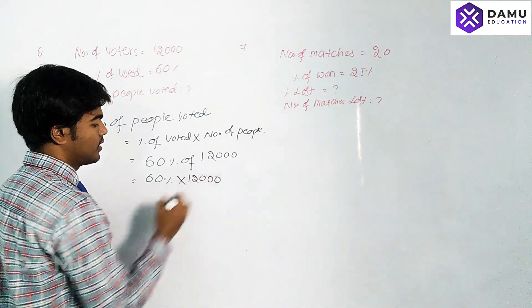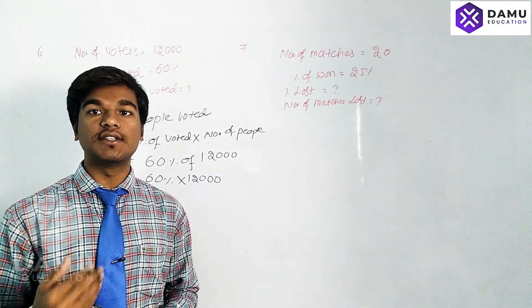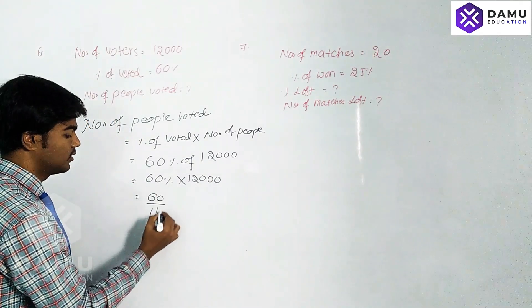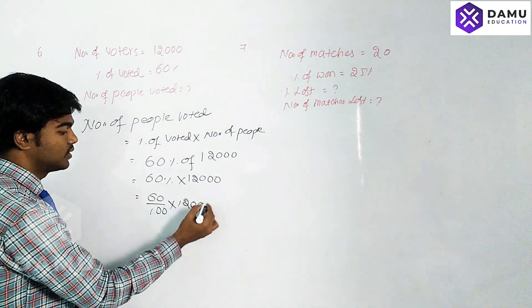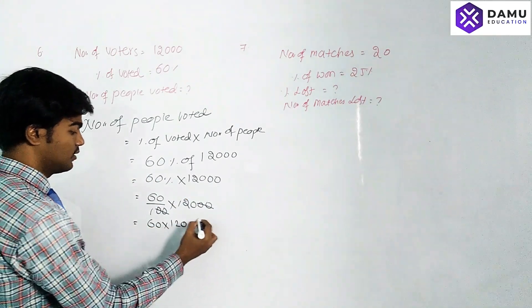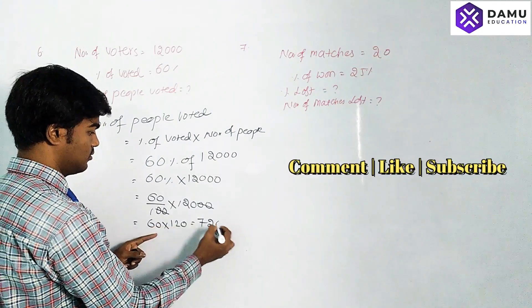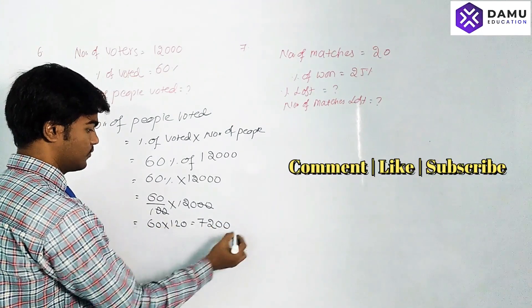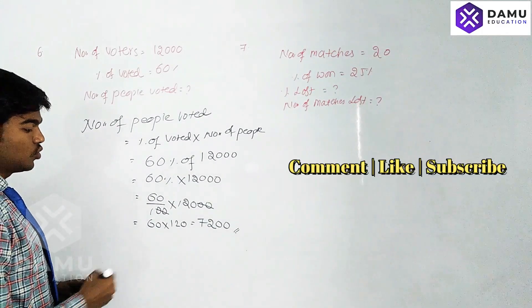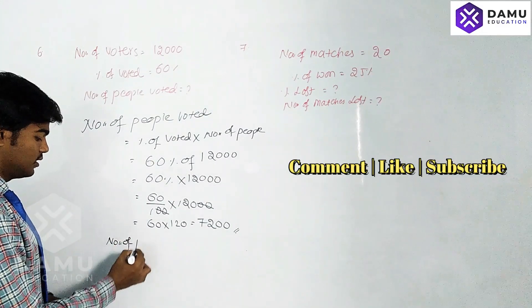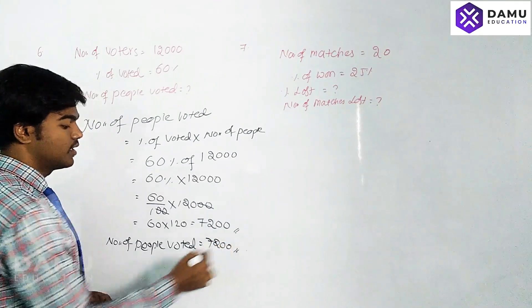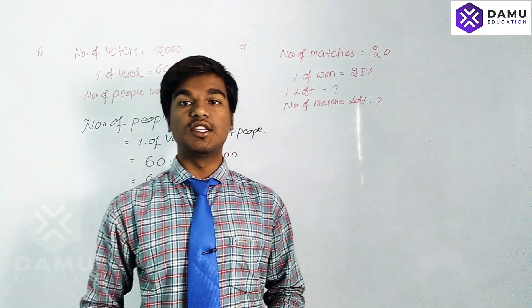If you want to convert a percentage into a value, we have to divide by 100. So 60 by 100 into 12,000 — the two zeros cancel — giving 60 into 120, which is 7,200. So the number of people who voted is 7,200.